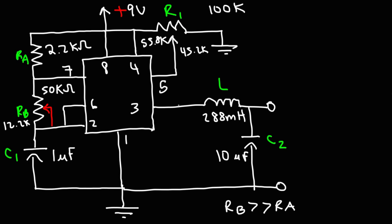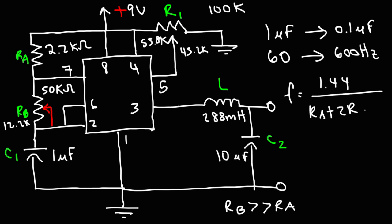So remember, R1 is used for fine-tuning. RB is used for general tuning. And if you want to create a sine wave with a higher frequency, keep in mind, not only can you adjust RB, but you can also use a different C1 value. For instance, if you decrease the value of C1 from 1 microfarad to 0.1 microfarad, the frequency will increase by a factor of 10 from 60 hertz to 600 hertz. So C1 will have a direct impact on the frequency of the circuit based on this formula. As you can see, C1 is on the bottom of the formula. So as you increase C1, the frequency decreases. Likewise, if you decrease C1, the frequency goes up.